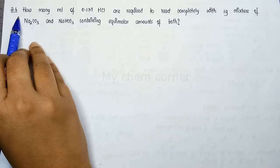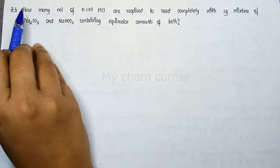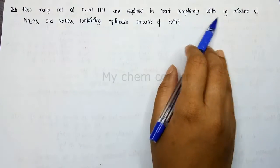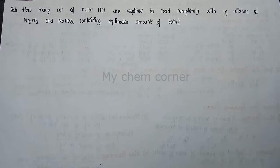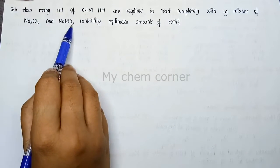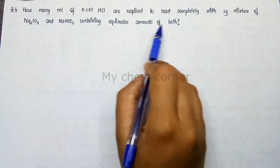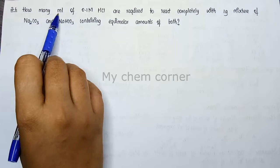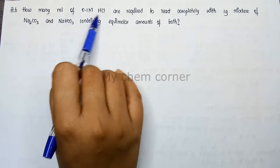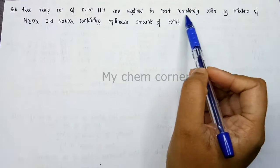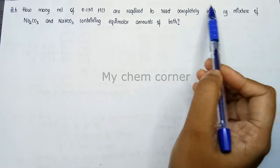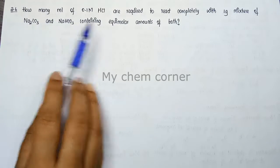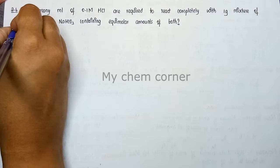Question 2.6: How many ml of 0.1 molar HCl are required to completely react with 1 gram of a mixture of Na₂CO₃ and NaHCO₃ containing equimolar amounts of both? We need to find the volume in ml of HCl that completely reacts with 1 gram of this equimolar mixture.